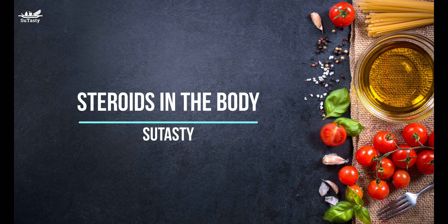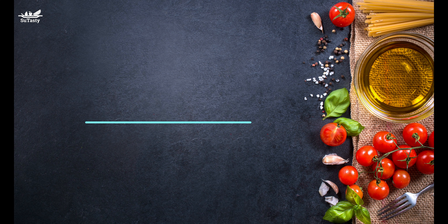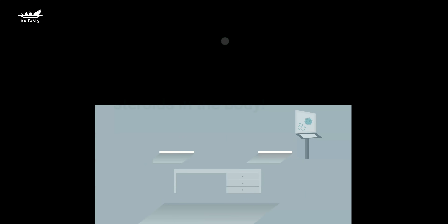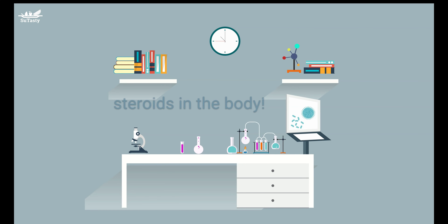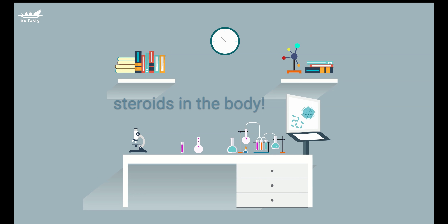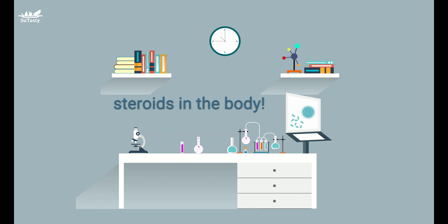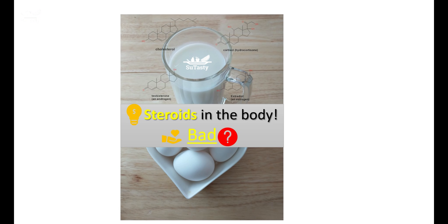Hello friends. In this video we talk about steroids and the vital roles steroids play in our bodies. A steroid is a biologically active organic compound with four rings arranged in a specific molecular configuration, as shown in this video. Steroids have two principal biological functions.